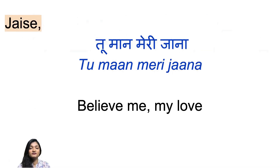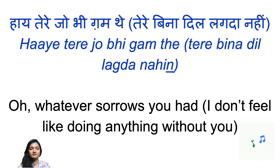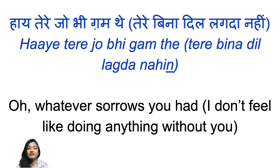This is where I've replaced jaan with jana to show you that jana also means beloved or love. So tu maan meri jana means the same as tu maan meri jaan — believe me, my love. Hai tere jo bhi gam the — hai is the exclamation for O. Jo bhi is whatever, tere jo bhi gam the means whatever sorrows you had — this sentence is in past tense, hence it ends with te.